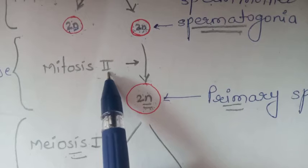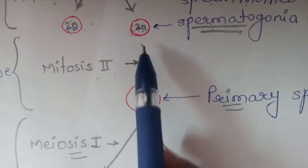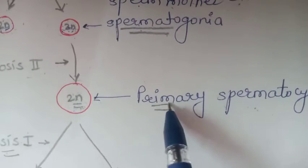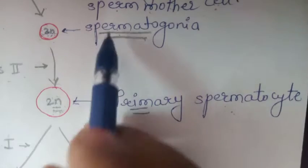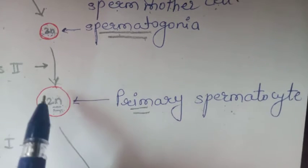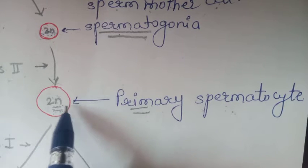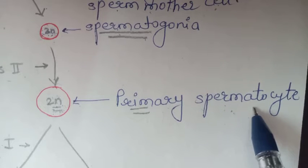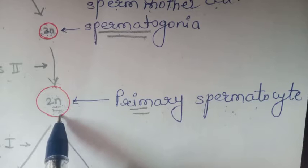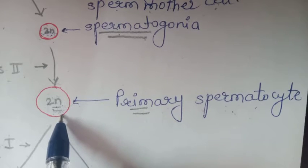The primordial germ cells undergo the first mitotic division and form two diploid cells known as spermatogonia. These spermatogonia again undergo a second mitotic division and form a primary spermatocyte. This primary spermatocyte is also a diploid cell — that means the chromosome number is 46, or 23 pairs of chromosomes are present.